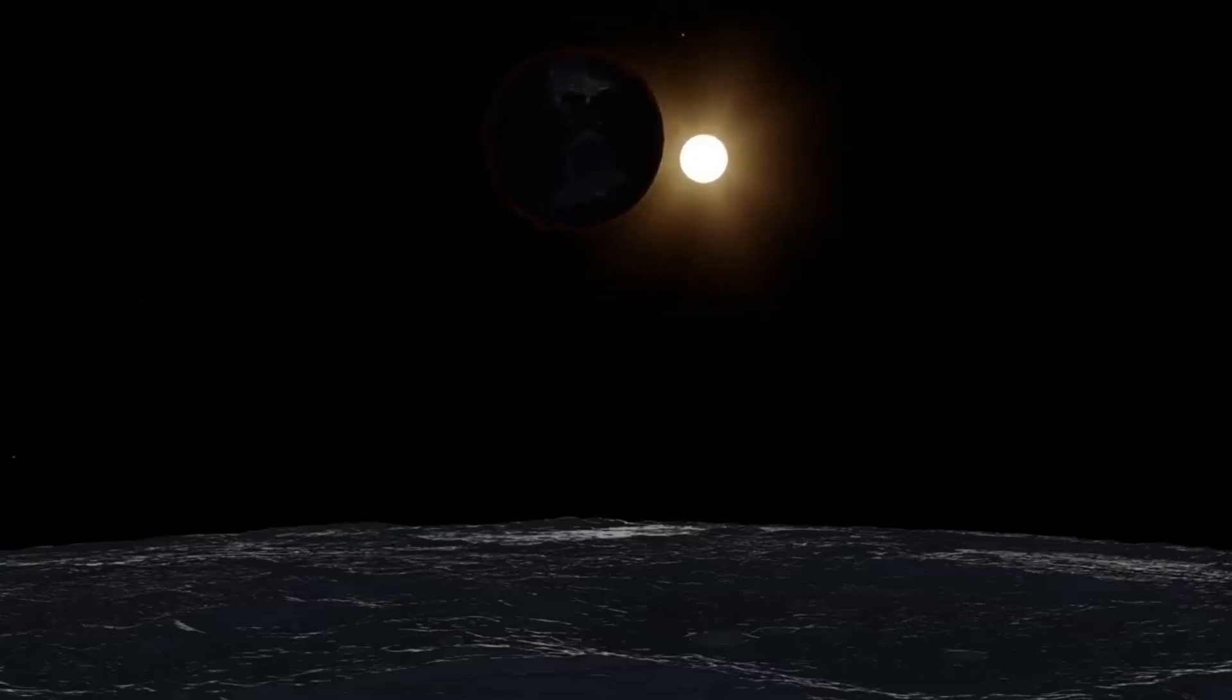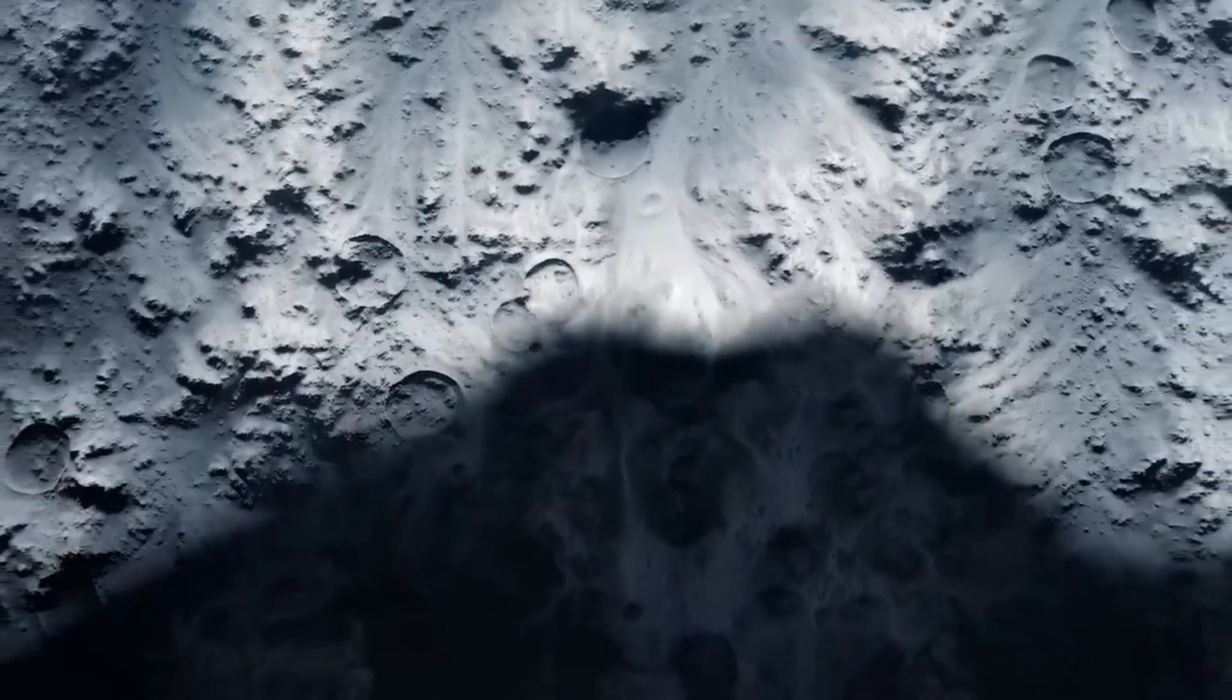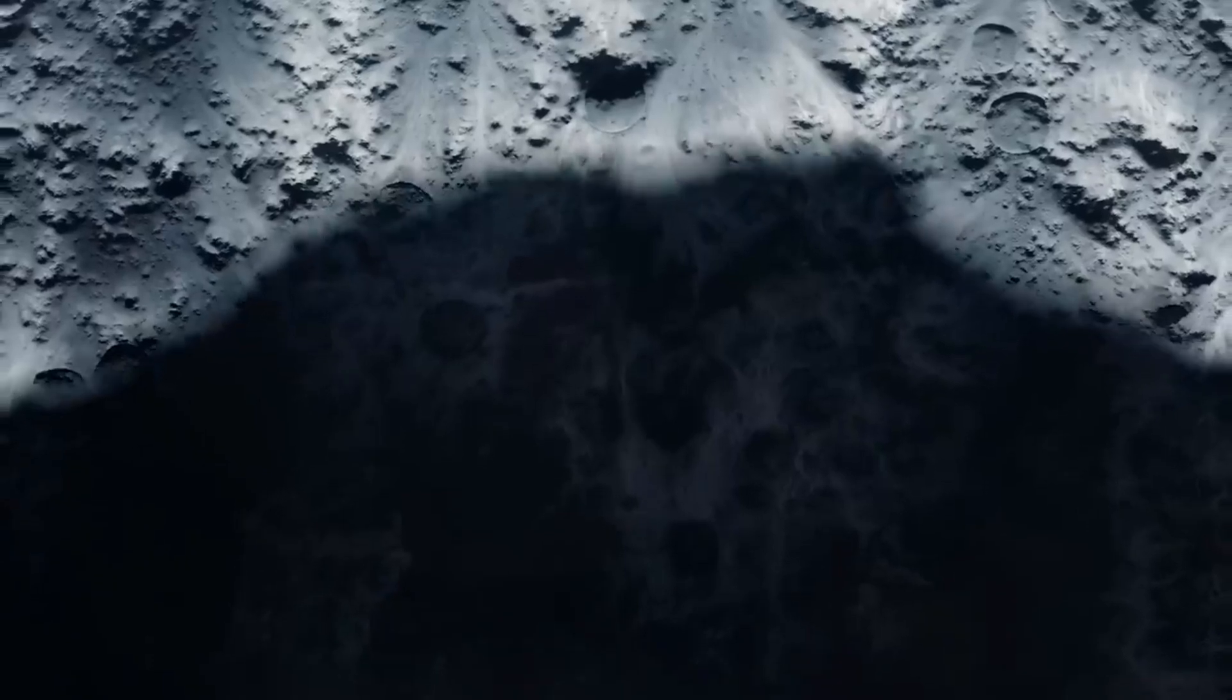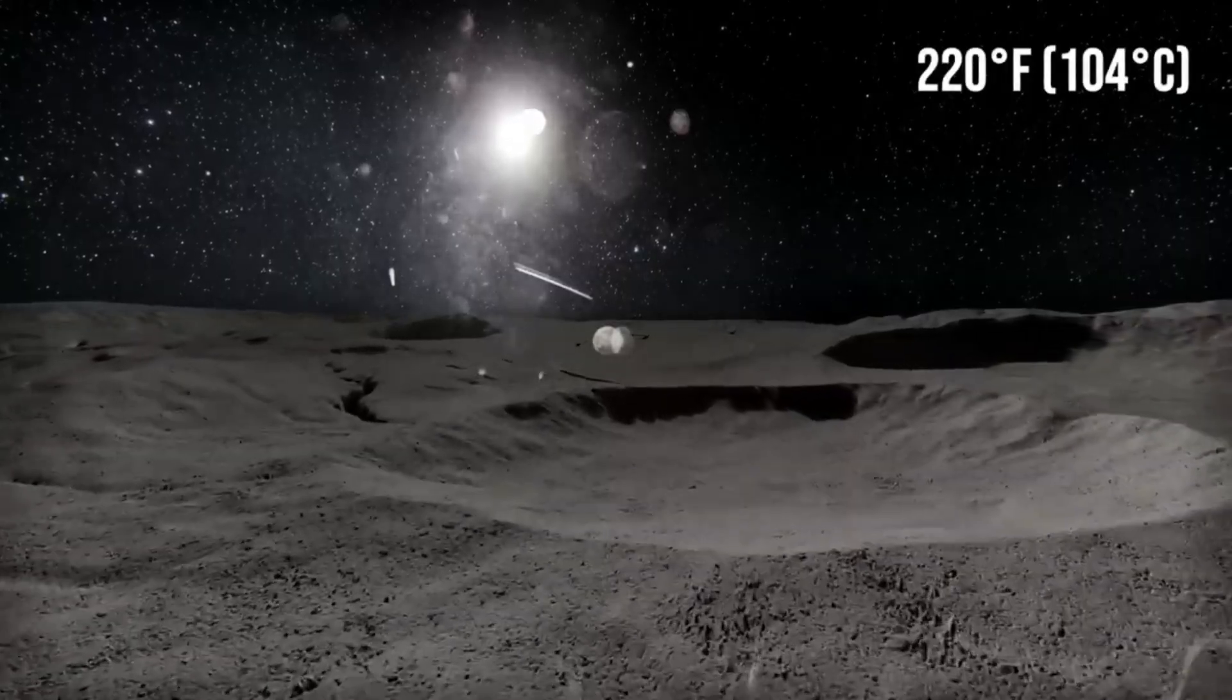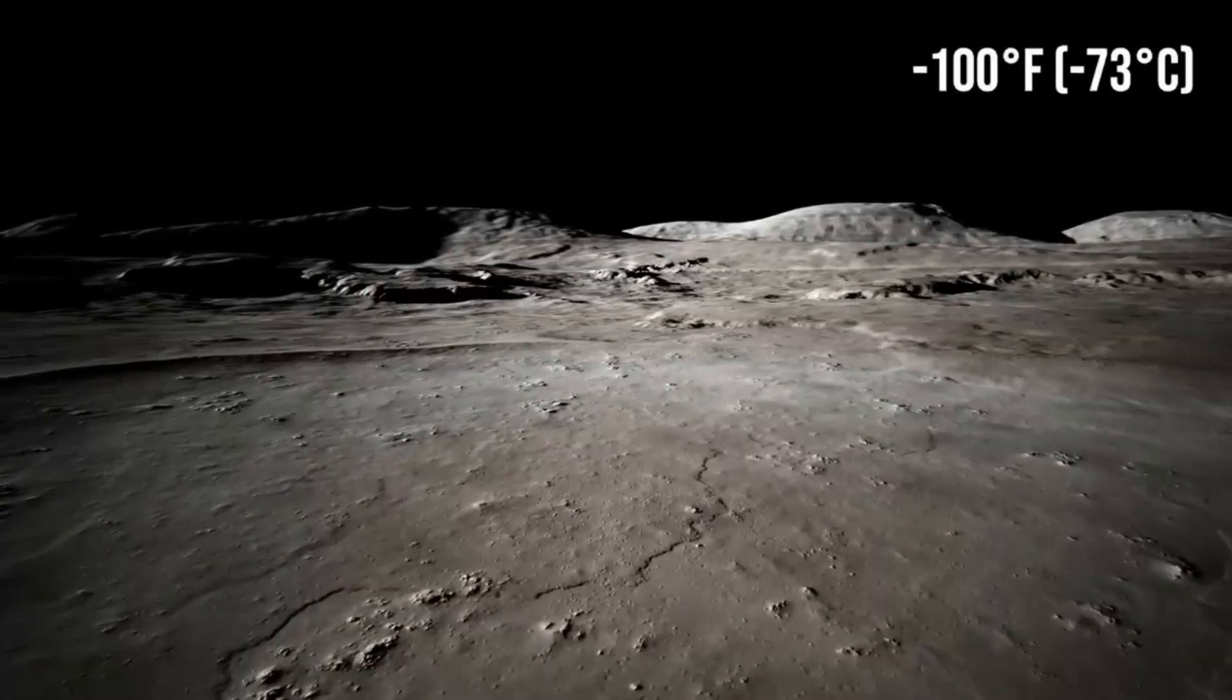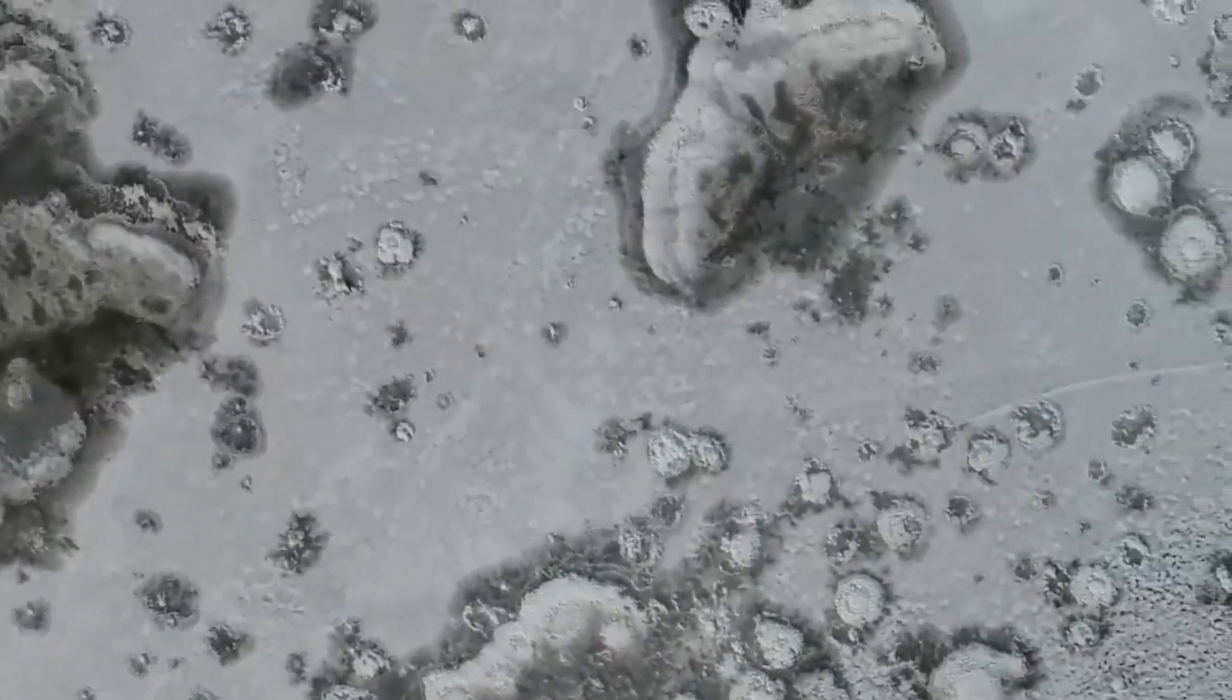Today, with advanced mathematics and computer models, scientists can predict eclipses many years into the future. We can know the exact date, exact time and the exact region from where the eclipse will be visible. This knowledge is not just useful for astronomers, but also for calendars, navigation and even space science.